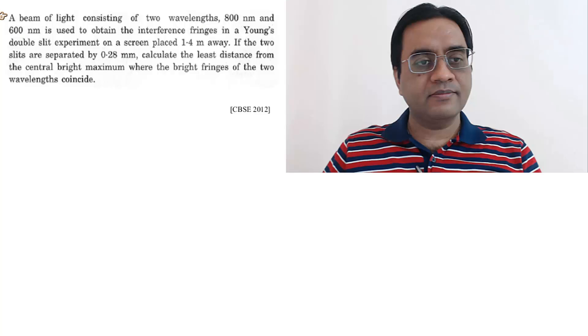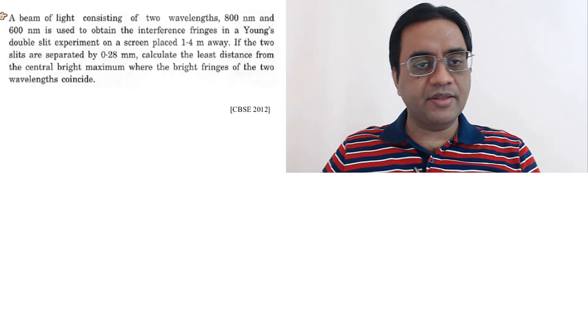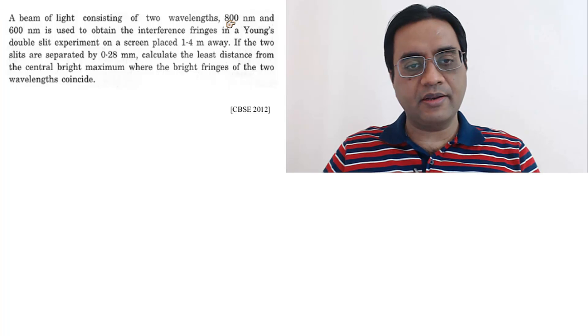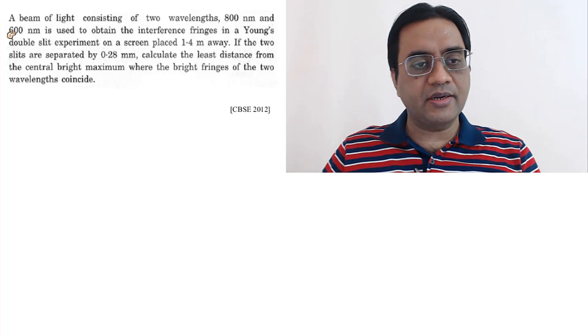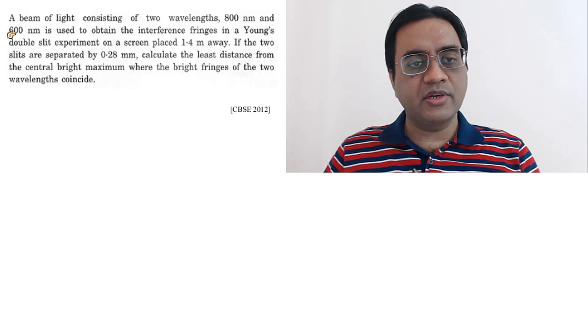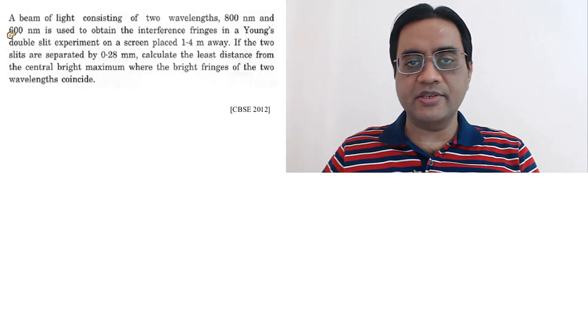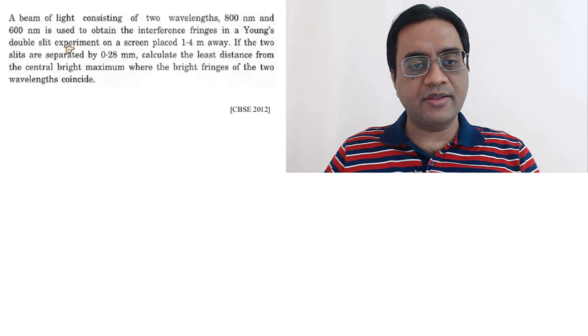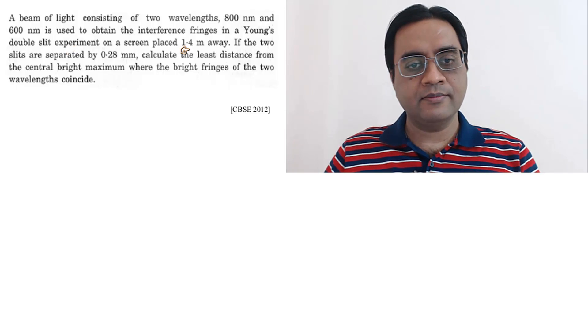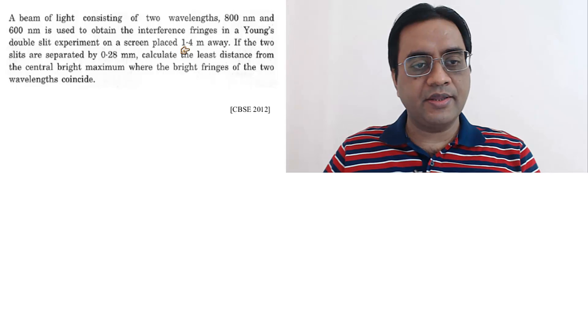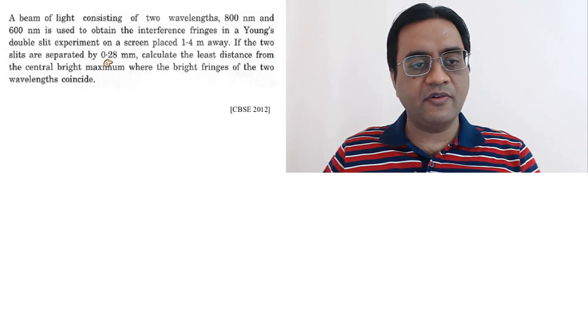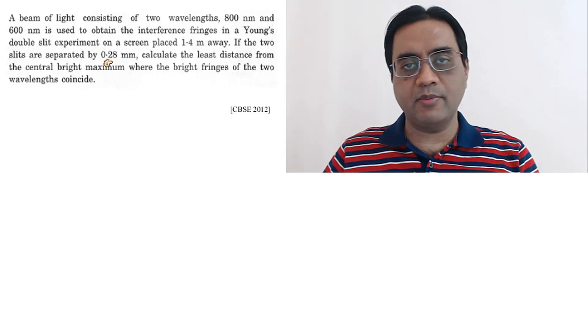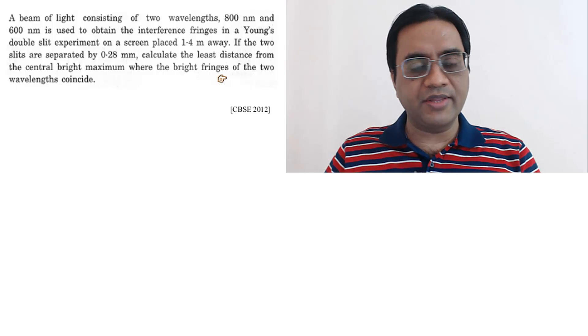The problem is: a beam of light consisting of two wavelengths, 800 nm and 600 nm, is used to obtain the interference fringes in a Young's double slit experiment on a screen placed 1.4 meters away. If the two slits are separated by 0.28 mm, calculate the least distance from the central bright maximum where the bright fringes of the two wavelengths coincide.